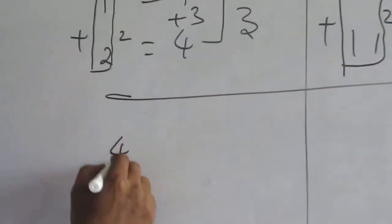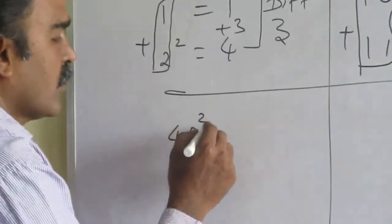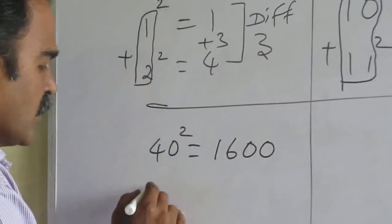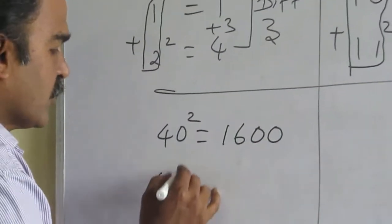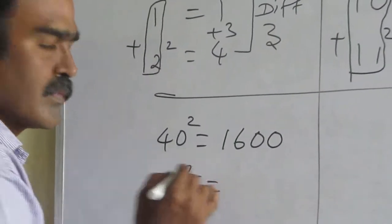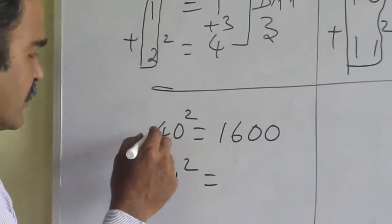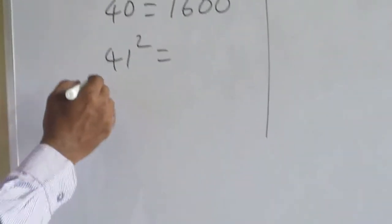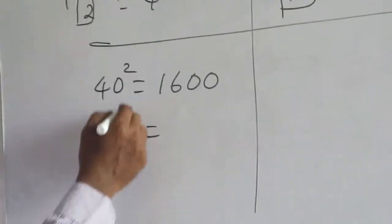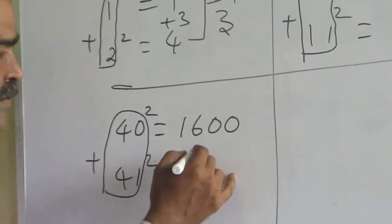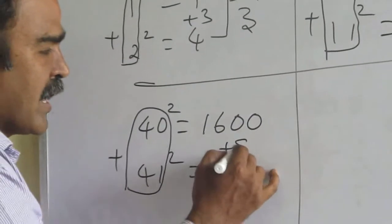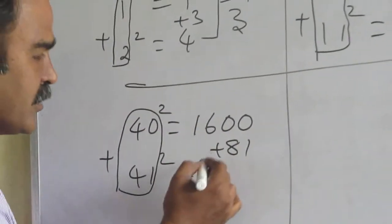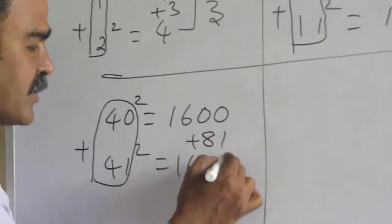Let us go for one more example. What is 40 square? 1600. What is 41 square? Just let us add the base number: 40 plus 41. What is 40 plus 41? 81. Just you add it here. So, 1600 plus 81 is 1681.